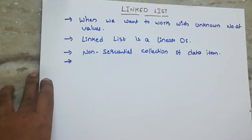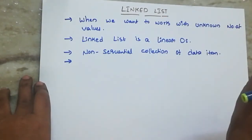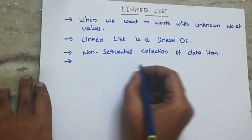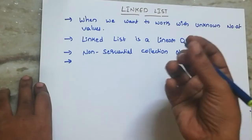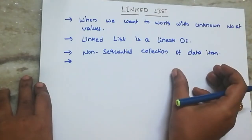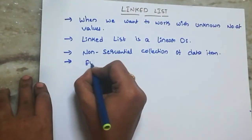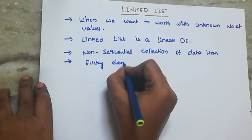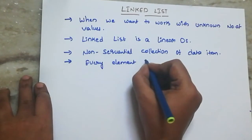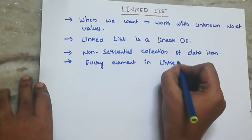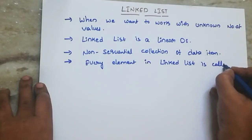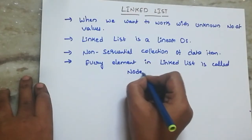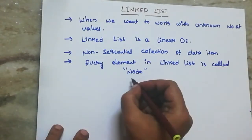So linked list's main important part is how we use an unknown number of values. This is the linear data structure — non-sequential collection of items. In a linked list, each and every element is called a node. Every element in a linked list is called a node.